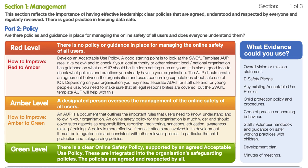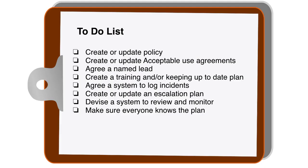Once you've worked through this you'll have a bit of an action plan and a to-do list, and I imagine most people's will look something like this. You're going to need to look at your policies, look at your behaviour or acceptable use agreements, sort out a named lead, create a training plan and a keeping-up-to-date plan, a system to log incidents, an escalation plan, a review and monitoring system, and make sure everyone knows what's in your policy and what the procedures are. I'll work through each and give you some advice.